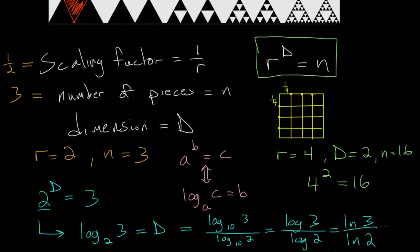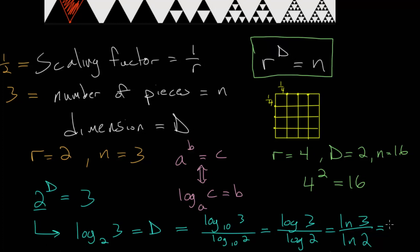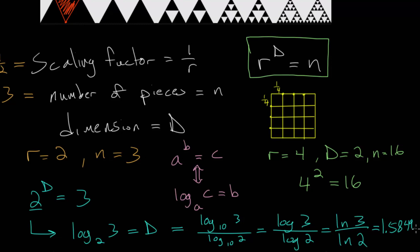When we plug this into a calculator, we will get an irrational number, namely the value 1.5849. This is an irrational number, meaning that this decimal will go on forever without some type of pattern. So this is the dimension of this Sierpinski triangle.